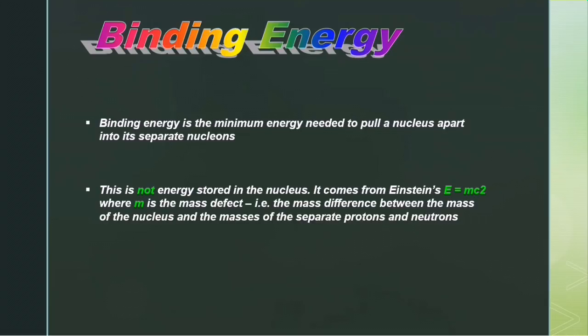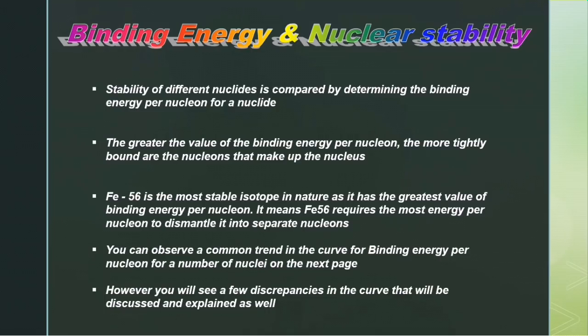Stability of different nuclides is compared by determining the binding energy per nucleon for a nuclide. The greater the value of the binding energy per nucleon, the more tightly bound are the nucleons that make up the nucleus. Iron-56 is the most stable isotope in nature as it has the greatest value of binding energy per nucleon. It means iron-56 requires the most energy per nucleon to dismantle it into separate nucleons.